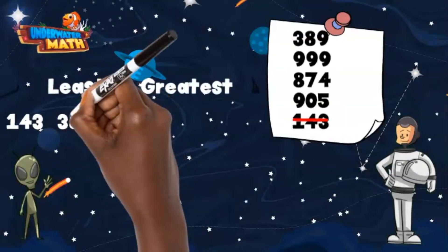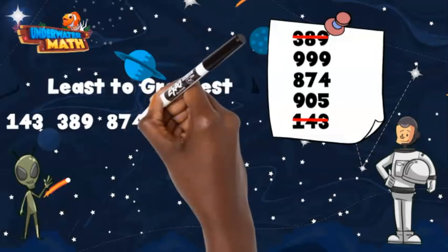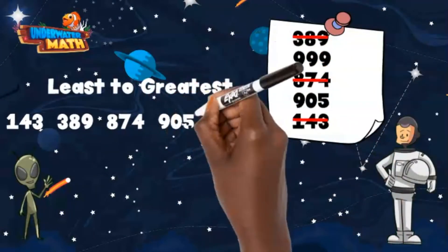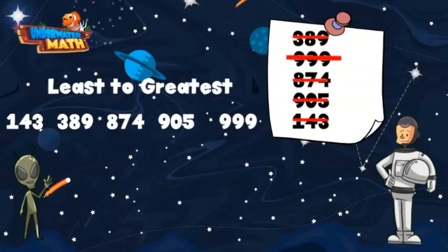The next smallest is 389, so we will put 389 second on our list. The next smallest is 874, then 905. Our largest number is 999, so we will put that last on our list. Great work! These numbers are now in order from least to greatest.